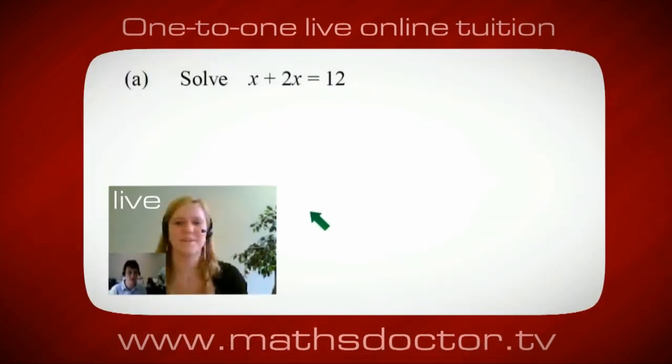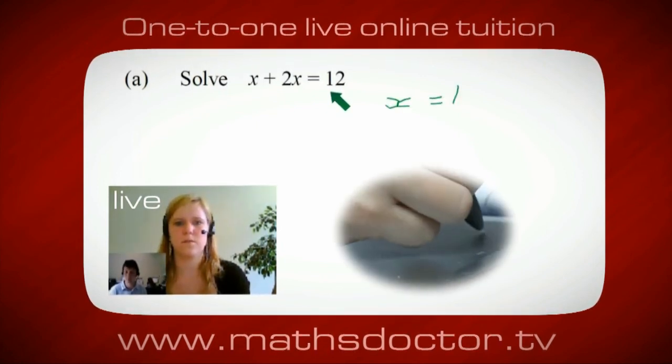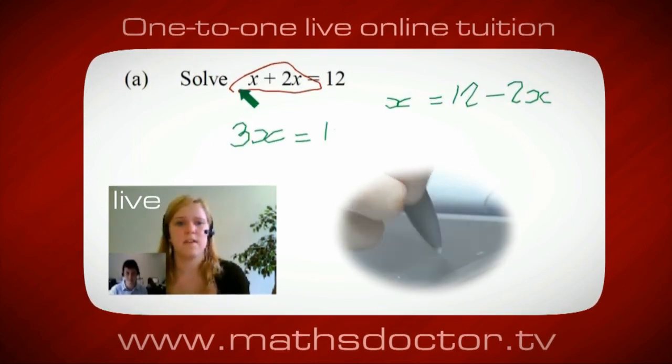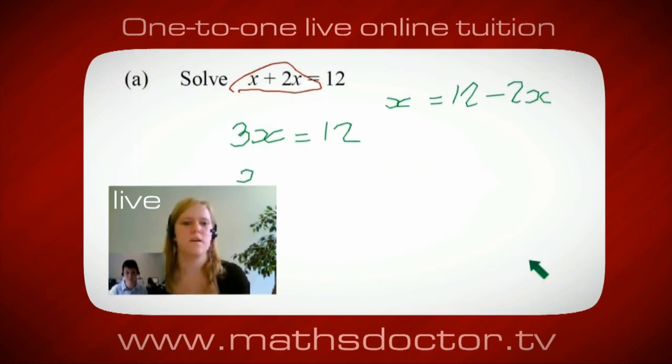So let's have a look at this one. Solve x plus 2x equals 12. So what do you think you do first? Well, I want x on its own, so I would put x equals 12 minus 2x. Okay, so a lot of the time we want to get x by itself, but what we want to do first is get all of these x's together. So can you see anything we can do with this? Get all these together in one place. Oh okay, it's 3x, isn't it? Yeah, absolutely. So 3x equals 12. Oh, and so x equals 4. Brilliant, spot on, well done.